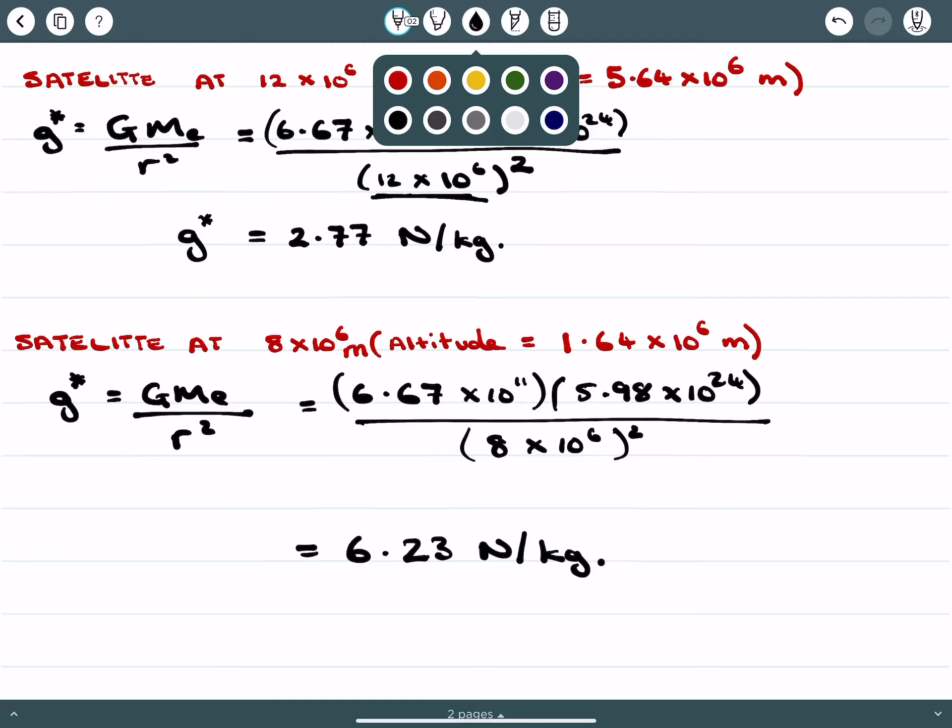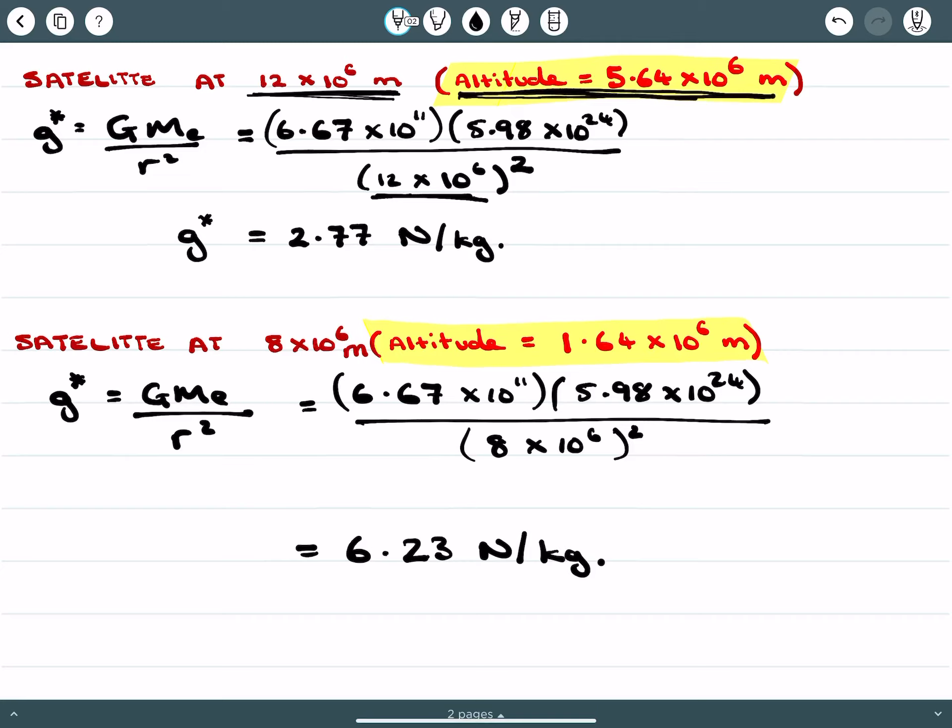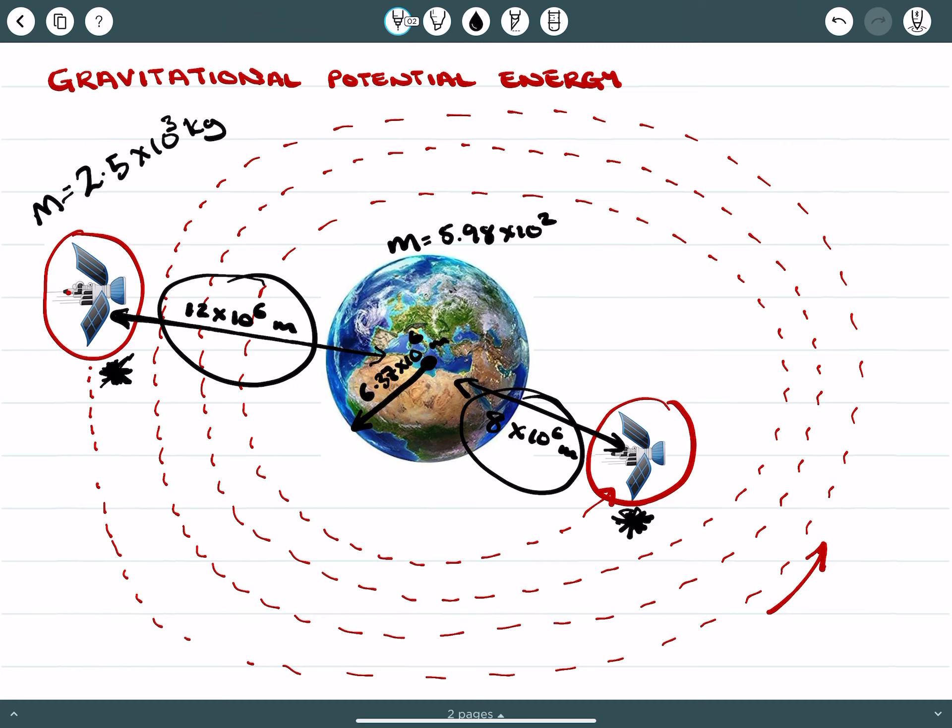I just want to highlight here that the altitude is really important. The reason why altitude is really important is because although we're using this value 12 times 10 to the 6 meters, that's the value from the center of the Earth. We must respect that when a lot of our calculations will be giving values which are in terms of altitude. And that's in reference to how high the satellite is from the surface of the Earth. So we must always be accounting for this radius of the center of the Earth to its surface.